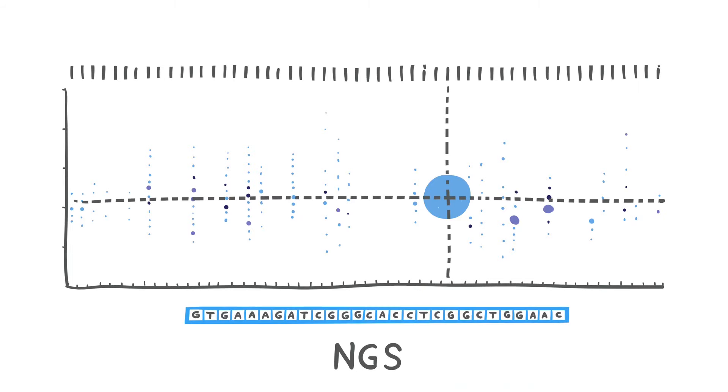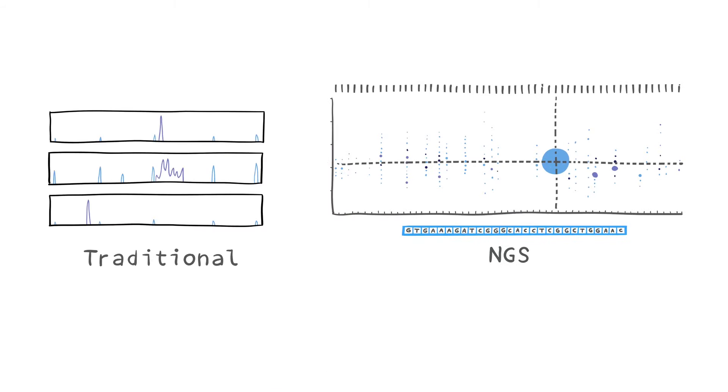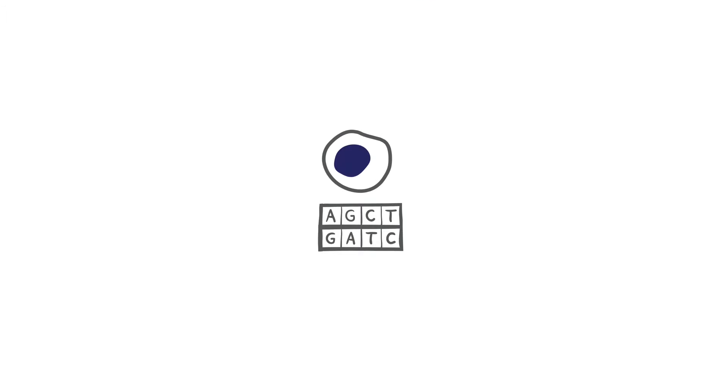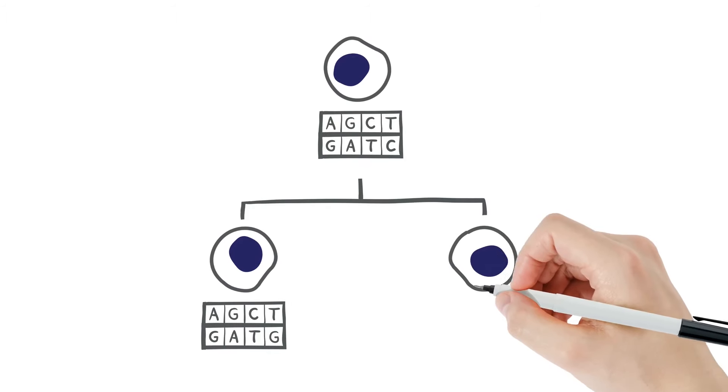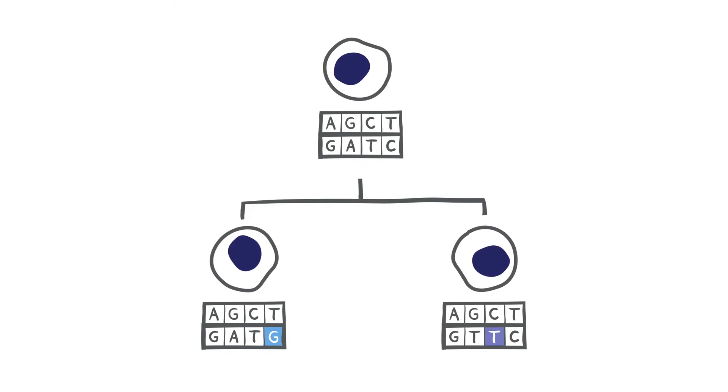NGS can provide far better specificity and resolution than traditional methods for lymphoid malignancy research. Because NGS uncovers the unique genetic sequence, you can identify individual clones with high accuracy and even assess the relationship between two different clones.